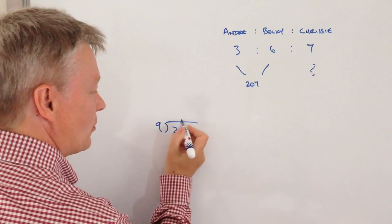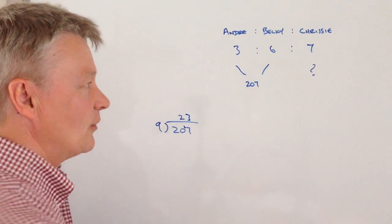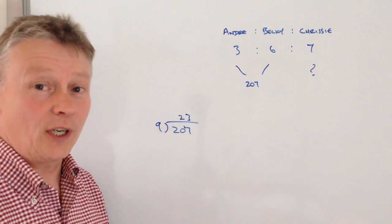So 9 into 20 is 2, and I've got 2 left over, so that's going to be 3. In other words, the value of 1 share is £23.